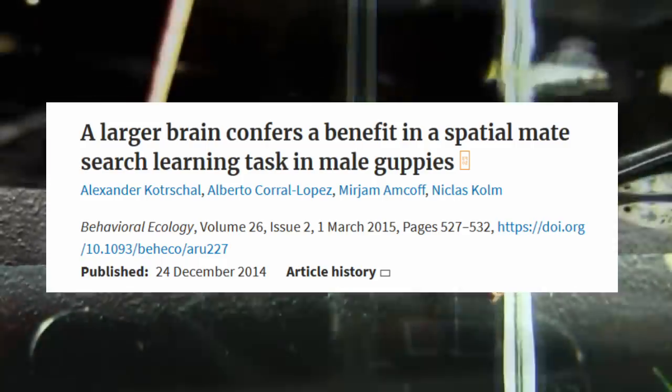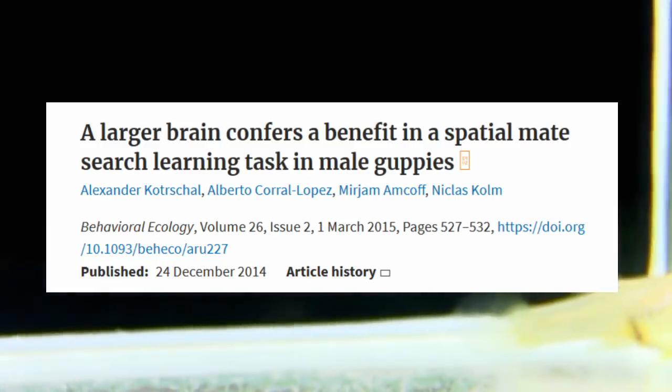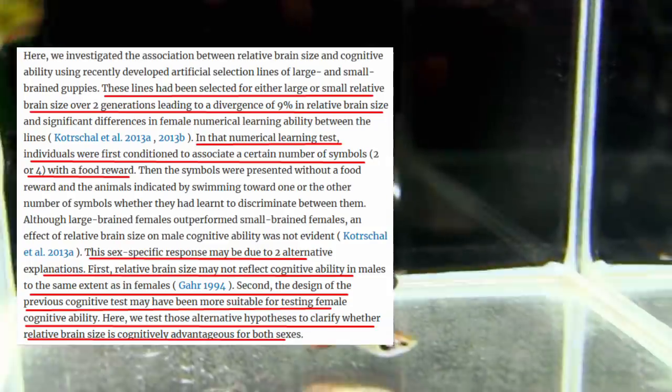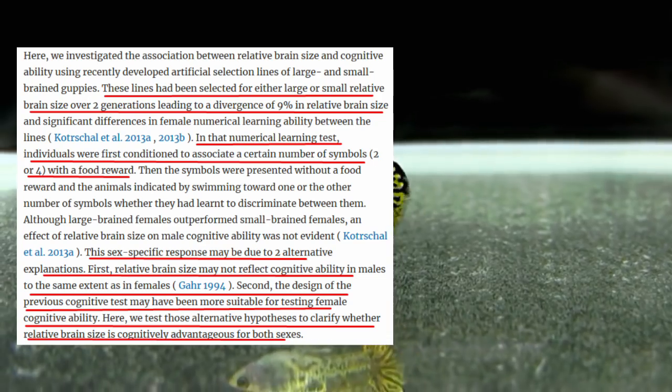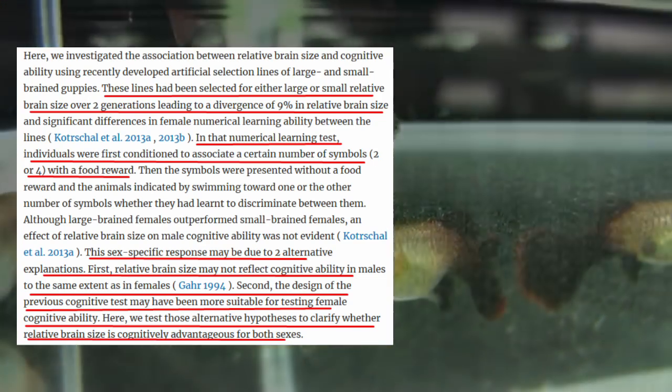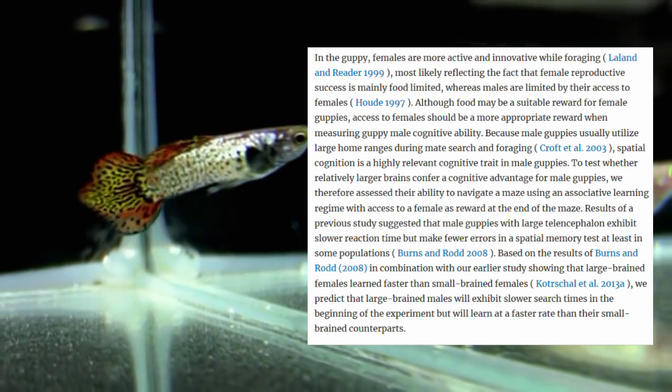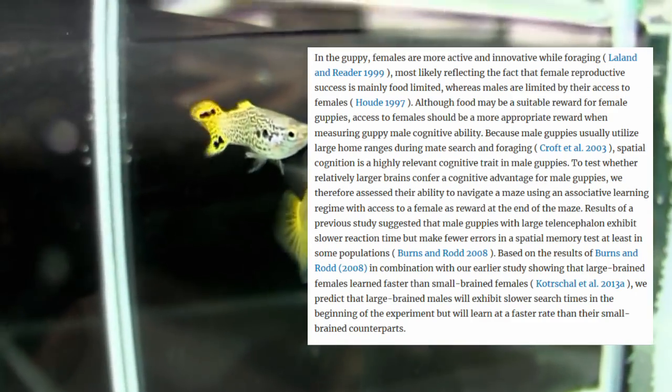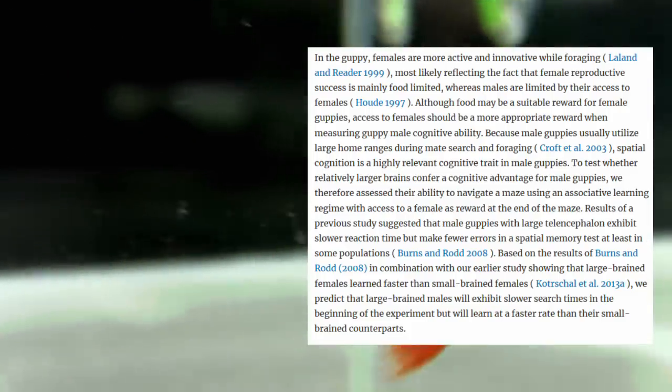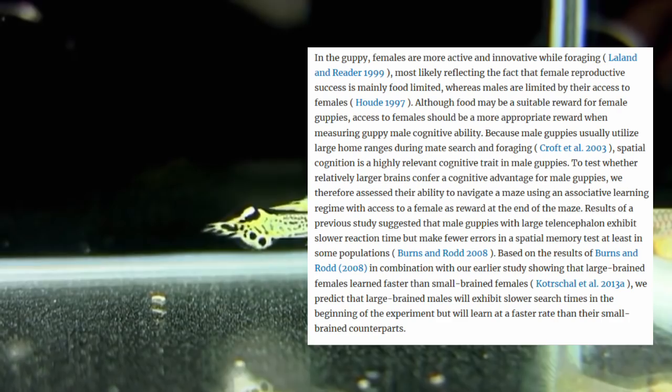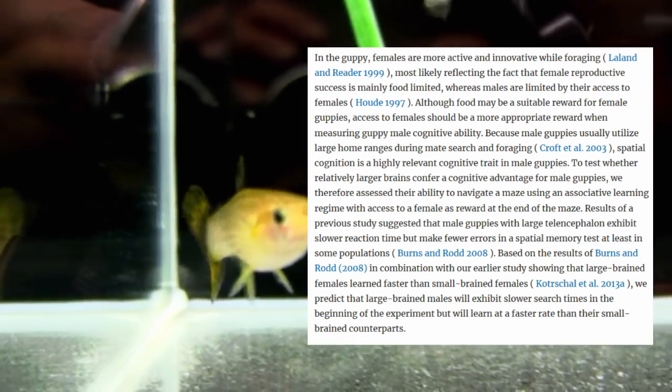So this second study looks at the spatial learning and perception skills of male guppies, and is still comparing the large brain population to the small brain population. This particular experiment was done over two generations, with a 9% difference in relative brain size. The testing done in this study is a direct follow-up to the previous study that we just went through. The proposed reason why this test might be better at finding the differences in male behaviour compared to female behaviour, was noted with the hypothesis that female reproductive success may be mainly food limited, whereas males are limited by their access to females.